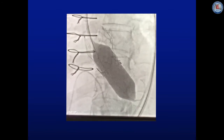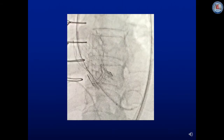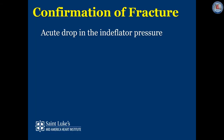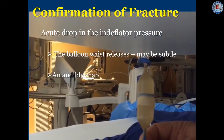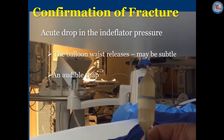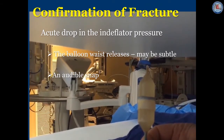Here's an example, and you can see the classic sign of the waist being released at the time of fracture in this video. Confirmation of fracture, however, is best seen with an acute drop in the end deflator pressure. The balloon waist will sometimes be very clearly seen, as in the last video, but this can be quite subtle and shouldn't be relied upon to indicate that fracture has occurred. Finally, an audible snap or pop may be heard coming from the patient when fracture occurs.